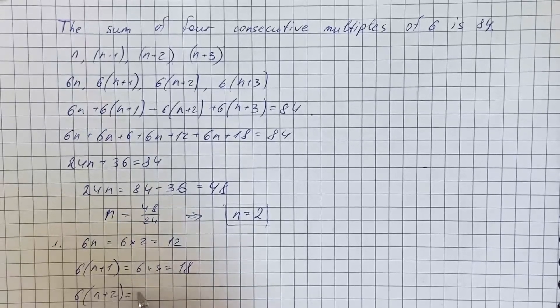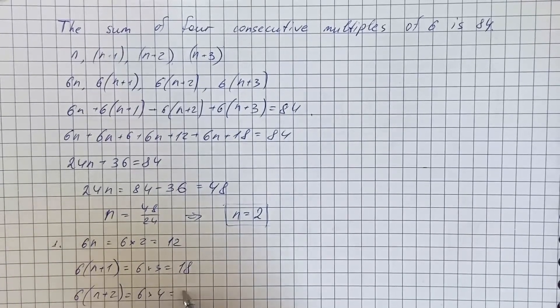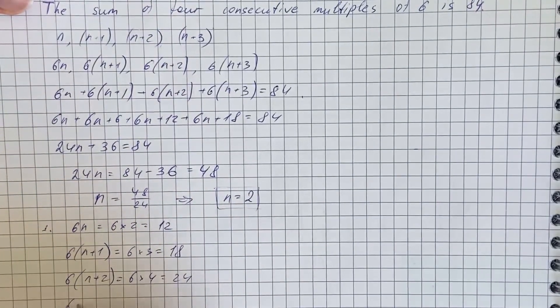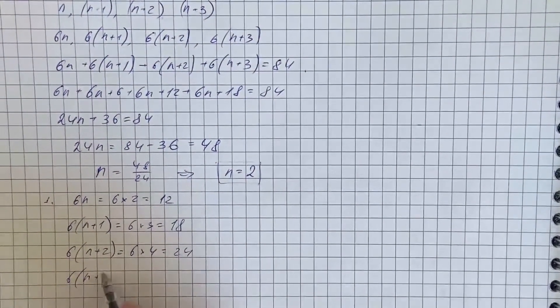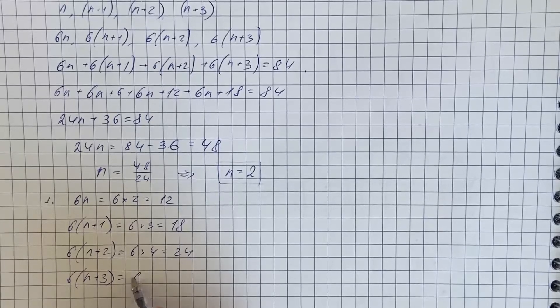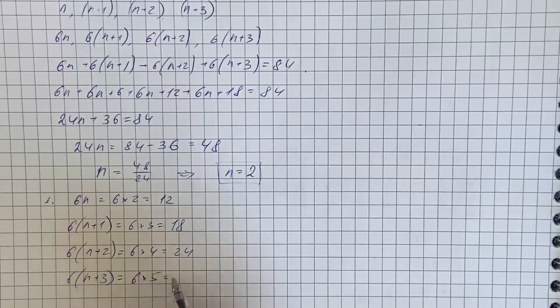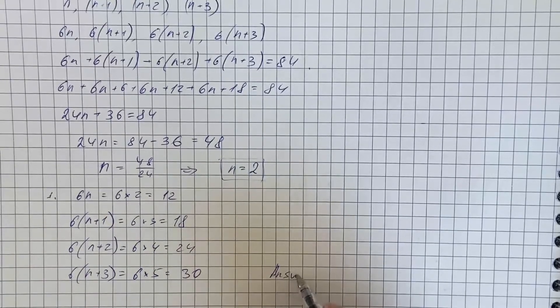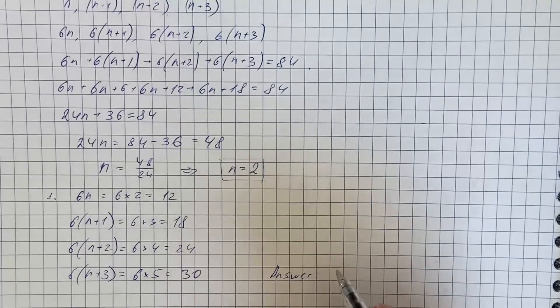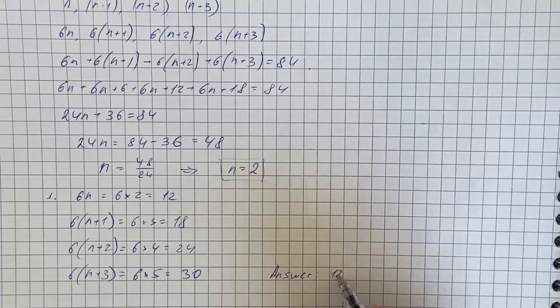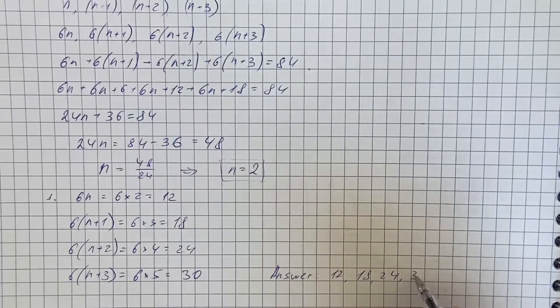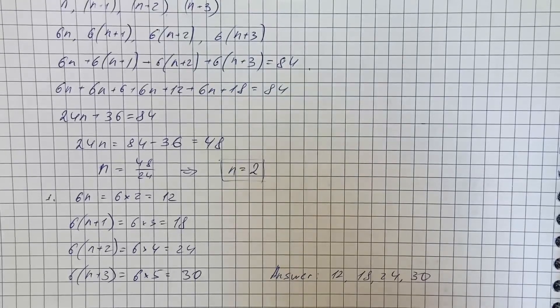The next one is 24, and the last one is 30. Therefore, the answer is that the four multiples are 12, 18, 24, and 30, so their sum equals 84.